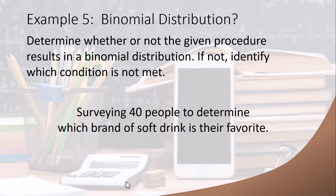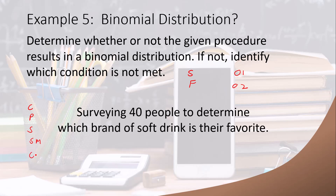This next example is designed to remind you that a binomial distribution can only have two outcomes per trial — either success or failure, or outcome one versus outcome two. Here we want to determine whether surveying 40 people to find out their favorite brand of soft drink results in a binomial distribution. There are many possible brands — Coke, Pepsi, Sprite, Sierra Mist, Cheerwine — so there are more than two outcomes per trial. This does not follow a binomial distribution.